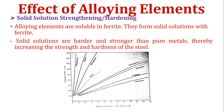Effect of alloying elements. First — solid solution strengthening and hardening. Alloying elements are soluble in ferrites and form solid solutions with ferrites. Solid solutions are harder and stronger than pure metals, thereby increasing the strength and hardness of steel. A solid solution is a type of alloy which has a similar crystal structure of the base metals and alloying elements — that is called as the solid solution.